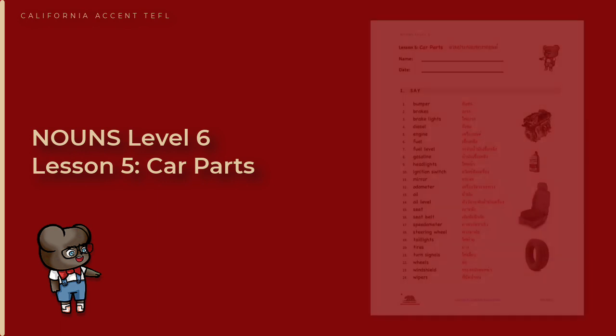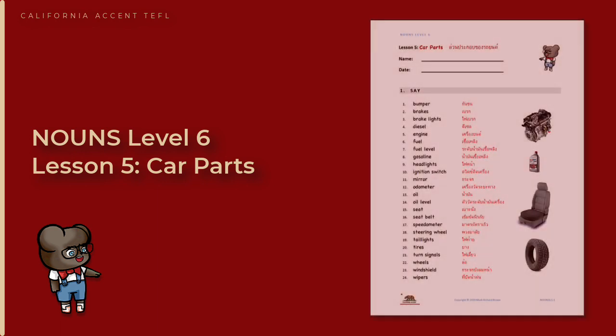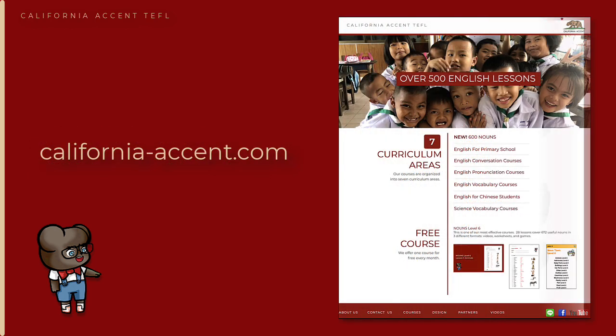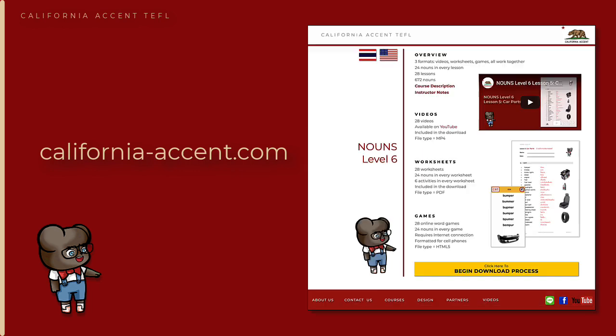This video covers Nouns Level 6, Lesson 5: Car Parts. You can download and print the worksheet for this lesson by going to the California Accent website, California-Accent.com. Look for 600 nouns, then go to Nouns Level 6.